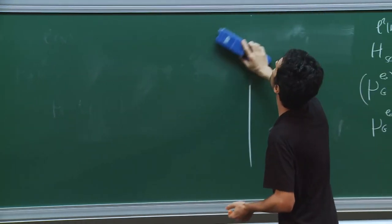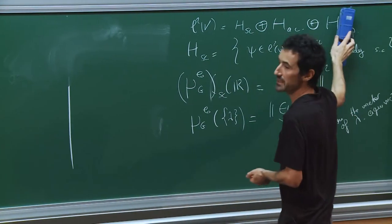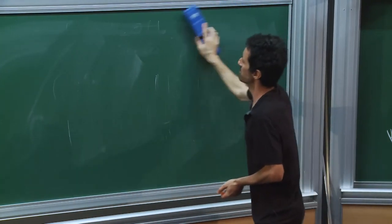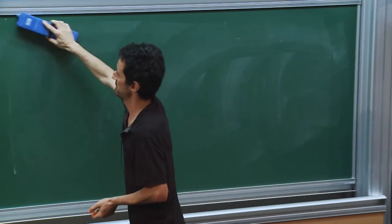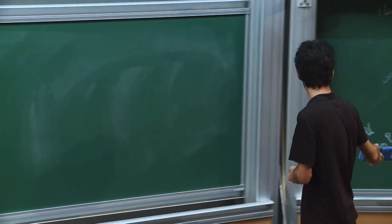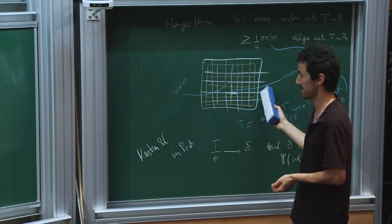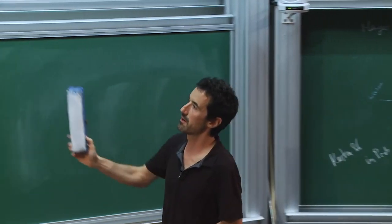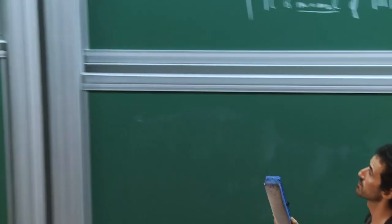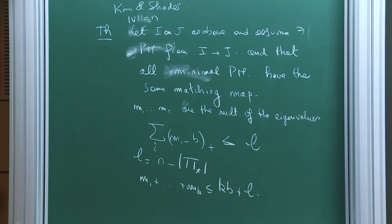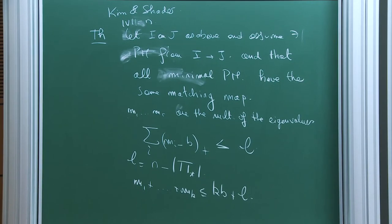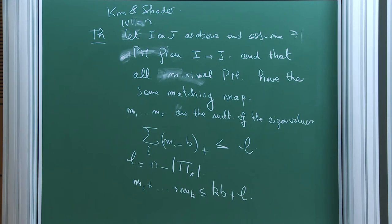It's an open problem to prove the same statement for d ≥ 3. The obstruction is not the first-passage percolation results — those hold in all dimensions. The problem is our theorem requires that all minimal path matchings have the same matching map, a condition that has no reason to hold in dimension 3 or higher.